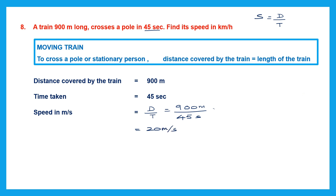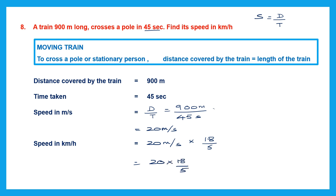The question asks for speed in kilometers per hour, so we convert 20 meters per second to kilometers per hour by multiplying by 18 by 5. So 20 multiplied by 18/5 — cancel: 20 divided by 5 is 4, and 4 into 18 is 72. The speed is 72 kilometers per hour.